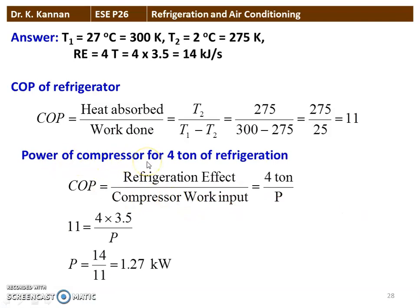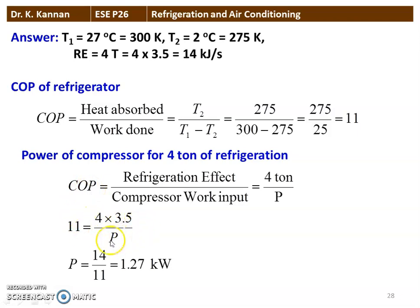The power required to drive the compressor for 4 tons of refrigeration: COP = refrigeration effect / power. So 11 = (4 × 3.5) / P = 14 / P. Therefore P = 14 / 11 = 1.27 kilowatts. The correct answer is 1.27 kilowatt.